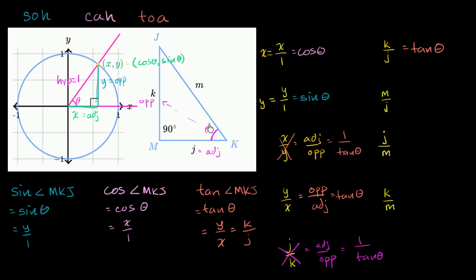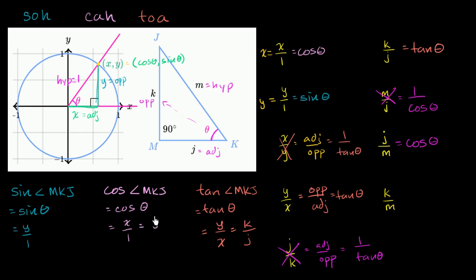Now we have m over j: hypotenuse over adjacent side. If it were adjacent over hypotenuse we'd have cosine, but this is the reciprocal — 1 over cosine of theta — not one of our choices, so we rule that out. But its reciprocal, j over m, is adjacent over hypotenuse, which is cosine. So cosine of angle mkj equals cosine of theta, which equals j over m. Finally, k over m is opposite over hypotenuse, which equals sine of theta — the same thing as sine of angle mkj. So sine equals k over m. And we are done.